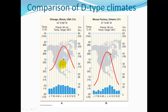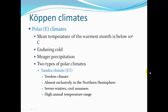Chicago is a DFA climate with extreme temperature changes — hot summers and very cold winters — and fairly similar precipitation across the year. Moose Factory, Ontario shows very dramatic temperature differences: very hot summers relative to very cold winters, with summer averages around 68 degrees Fahrenheit.